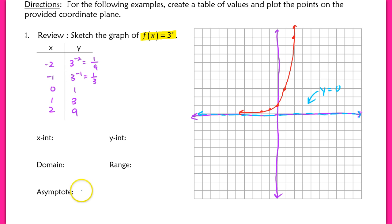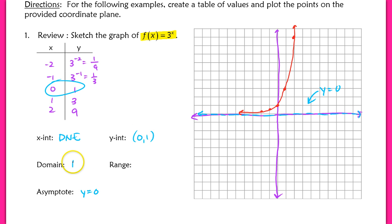I'm going to fill that in — I have an asymptote at y equals 0. My x-intercept does not exist because it never crosses the x-axis; we have an asymptote there. The y-intercept we found already in our table: it's (0, 1). The domain here would be all reals — I can plug in any value for x — but my output will always be greater than 0.